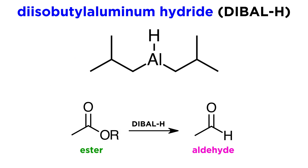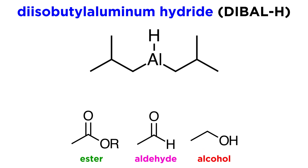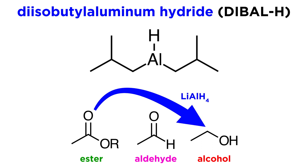One of its primary applications is as a reducing agent that is capable of transforming esters into aldehydes. So if we consider esters, aldehydes, and alcohols as three different oxidation states, this reagent allows us to move down only one oxidation state from the ester to the aldehyde, rather than the two steps required to get to the alcohol, which is what something like lithium aluminum hydride would do.